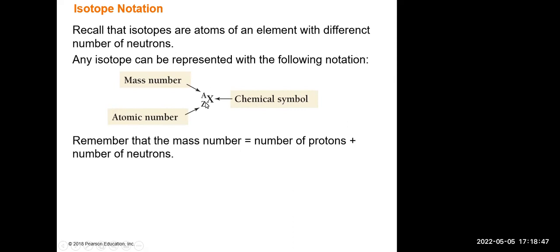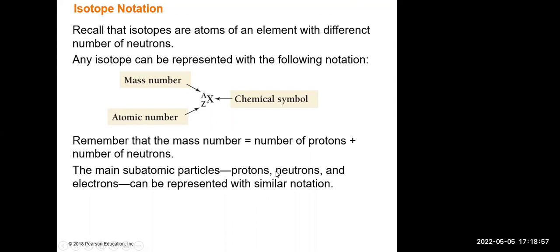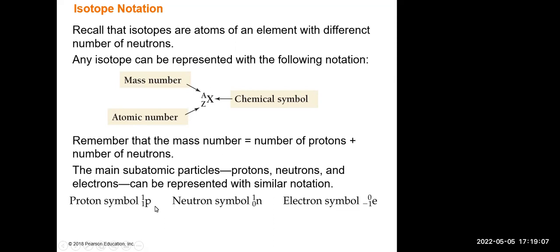The mass number A is the number of protons plus the number of neutrons. The main subatomic particles can each be represented by isotope notation: proton is p with A=1, Z=1; neutron is n with A=1, Z=0; and electron is e with A=0, Z=-1.